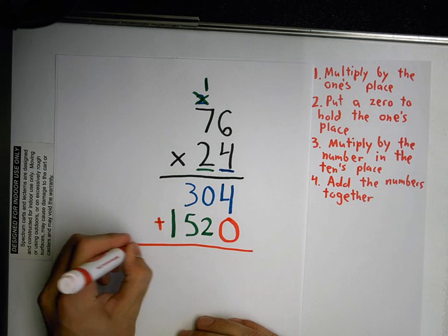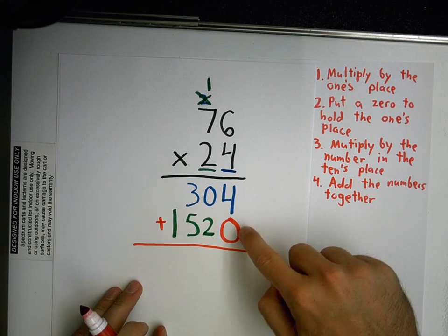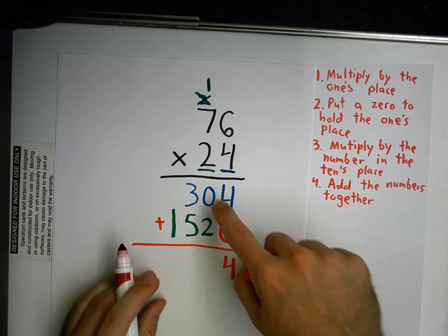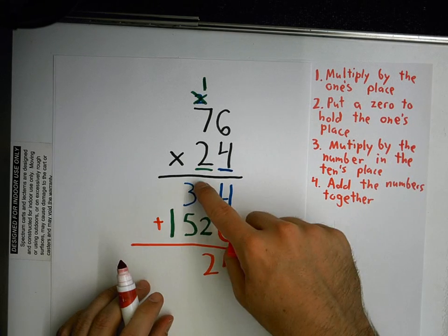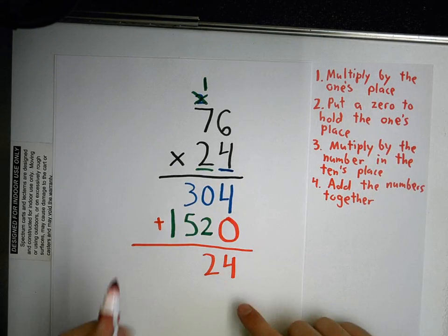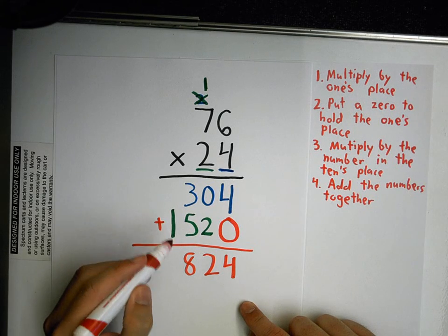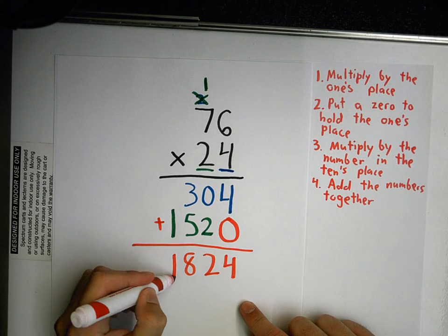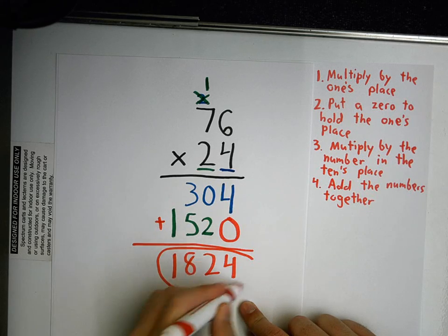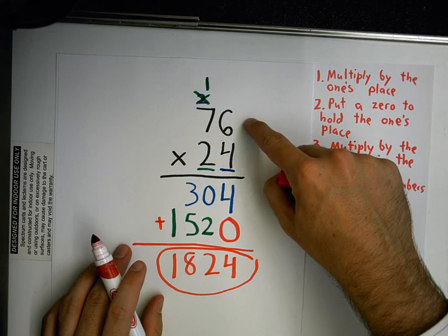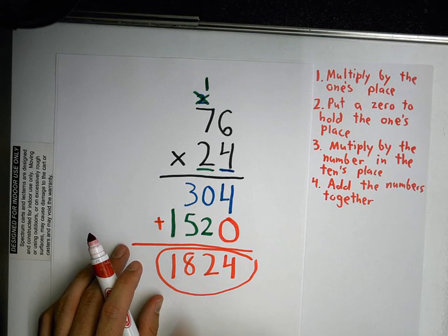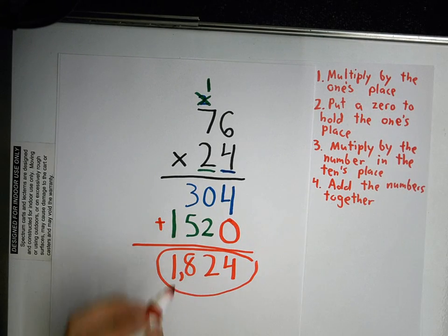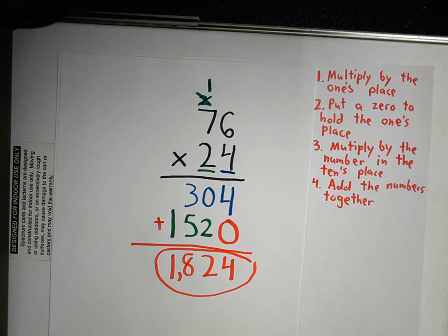I'm putting an equal sign. 4 plus 0 is 4. 0 plus 2 is 2. They're making it easy for us. 3 plus 5 is 8. And 1 plus, well, nothing is just 1. So when we take 76 and multiply it by 24, and we follow our 4 steps, the answer is 1,824. Okay? 1,824.